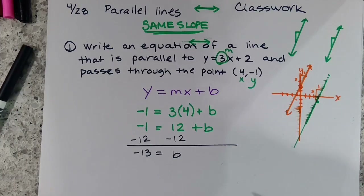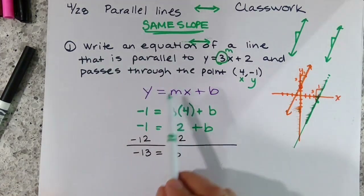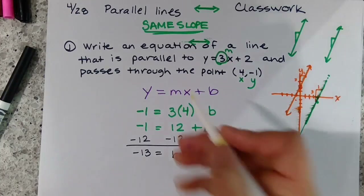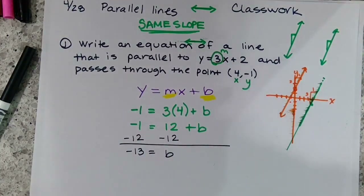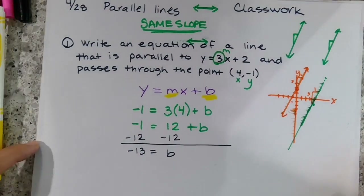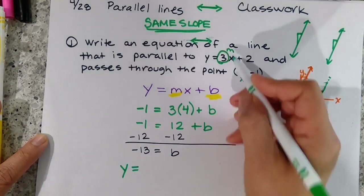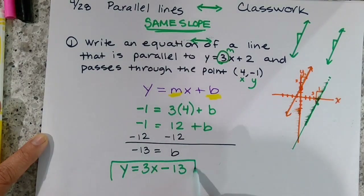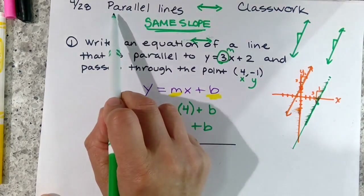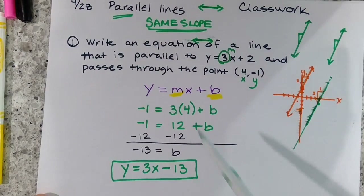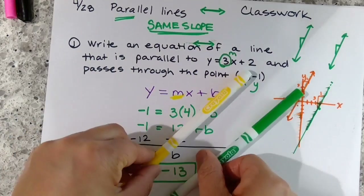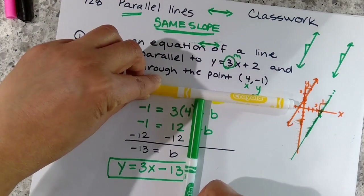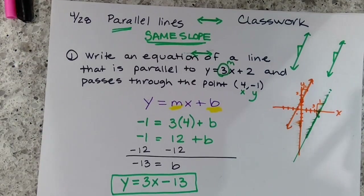The question asks us to write an equation of a line, which requires the slope and the y-intercept. So the final equation is y equals 3x minus 13. Parallel lines always run in the same direction, so they have the same slope. Next time we'll talk about perpendicular lines and what their slopes look like. That's it for today.